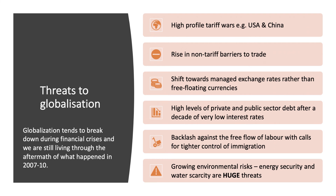We've also seen a decade of high levels of debt. We got through the global financial crisis, but in the last ten years we've had very low interest rates. In many countries — including China, the United States, the UK, Greece and Italy — there is a much higher level of public sector, household and corporate debt than in the previous cycle. That is a threat because big buildups of debt and asset price inflation tend to end badly. There has also been a big backlash against the free flow of labour, with calls for tighter immigration controls, including in the UK, which influenced the Brexit vote.